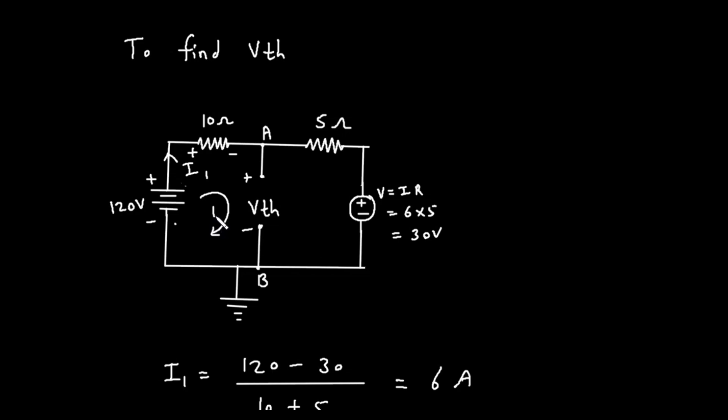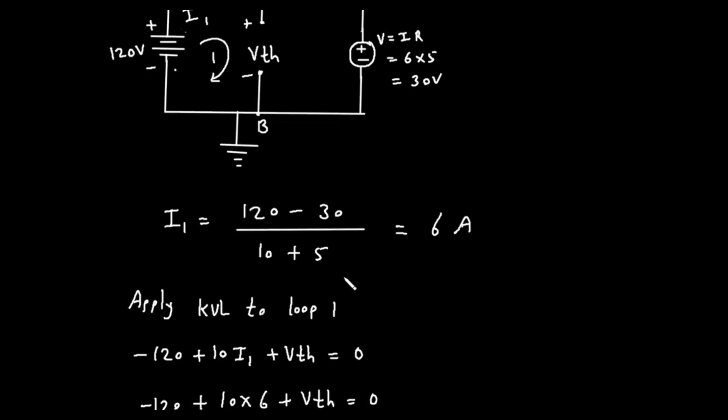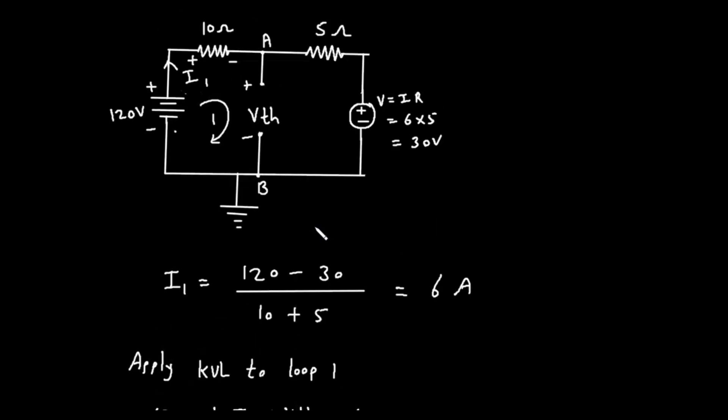This current I1 flows from the 120 volt source through the 10 ohm resistor. The calculation for I1 is shown as the difference in voltages divided by the sum of the series resistances in that path. So, I1 equals open parenthesis 120 minus 30 close parenthesis, all divided by open parenthesis 10 plus 5 close parenthesis. The numerator, 120 minus 30, is 90. The denominator, 10 plus 5, is 15. So, I1 is equal to 90 divided by 15, which gives a current of 6 amperes.